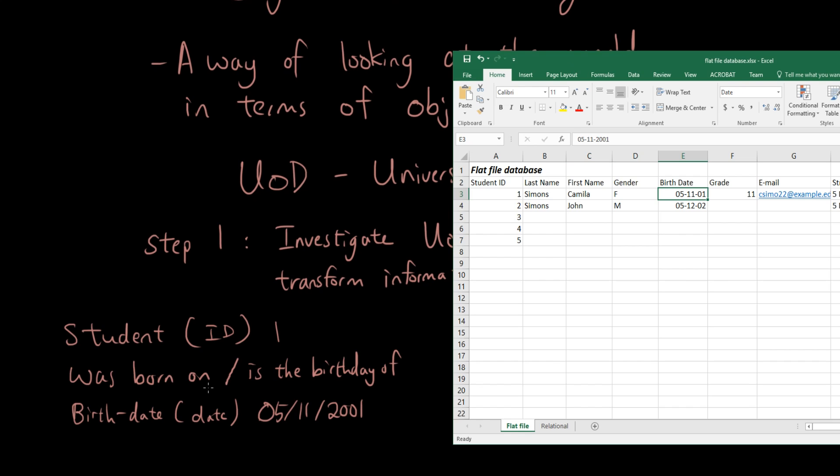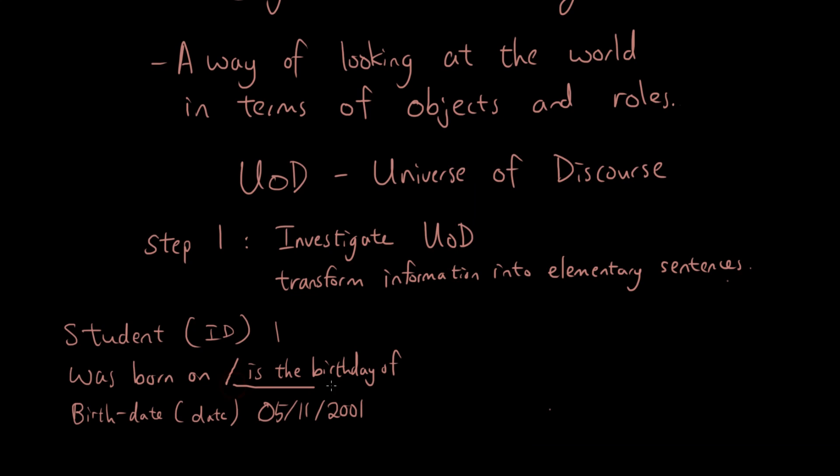Here is my first elementary sentence: student with an ID of 1 was born on the birth date 5th of November 2001. This part is for reading backwards: birth date with the date 5th of November 2001 is the birthday of student with an ID of 1.